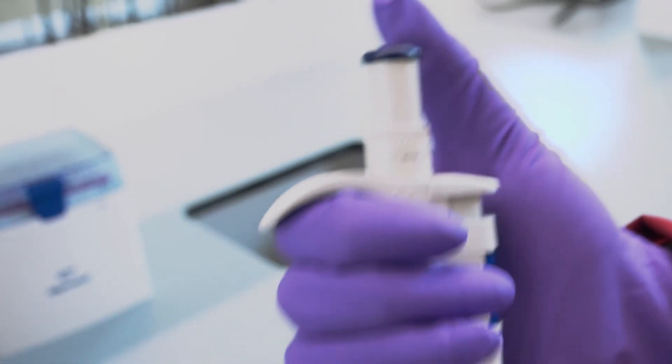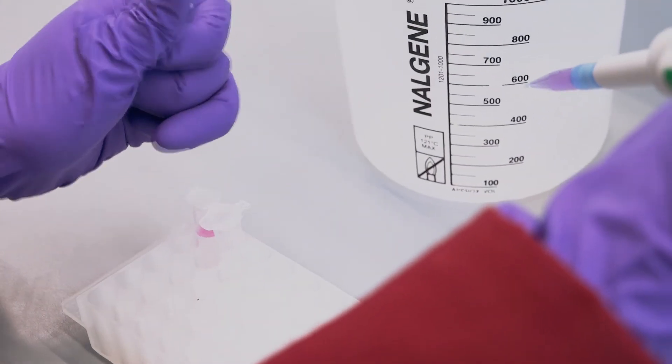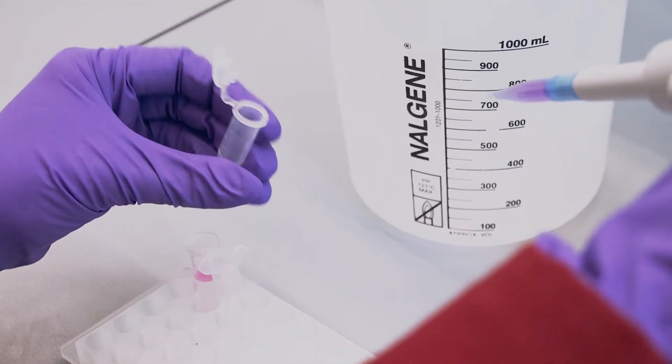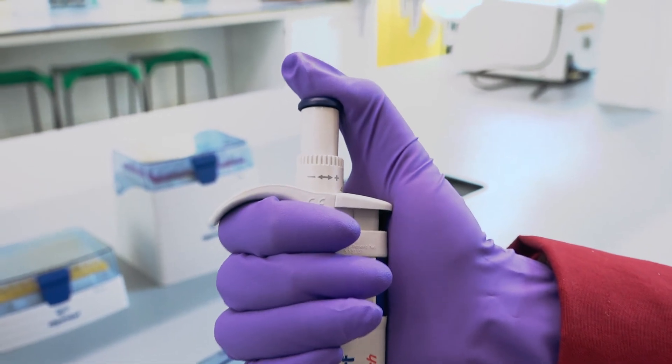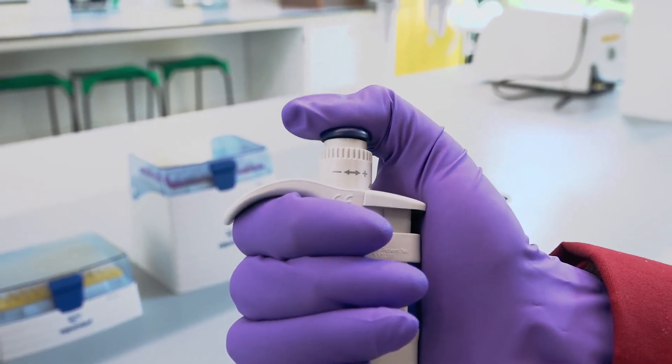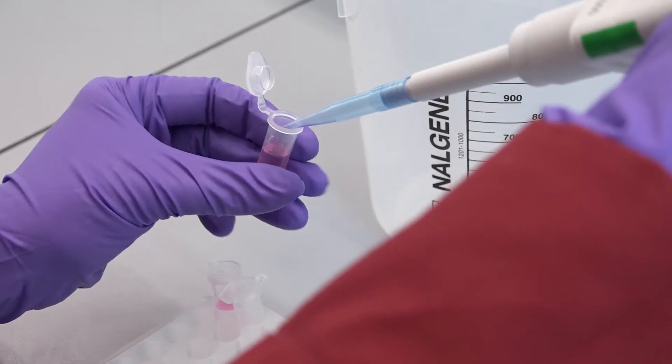Next, take your tip to the container for your sample and eject your liquid at an angle, always touching the vessel wall to ensure full transfer. Slowly push the plunger to the first stop and then push further to eject all the sample.